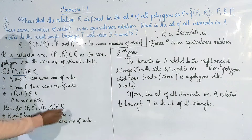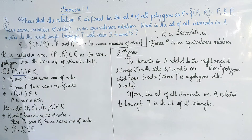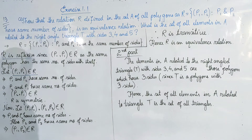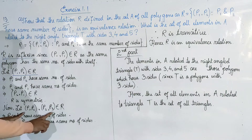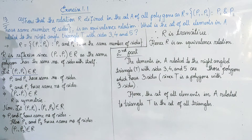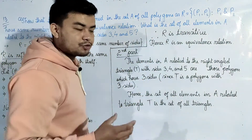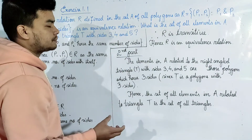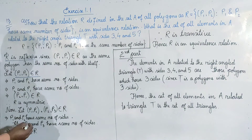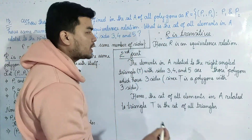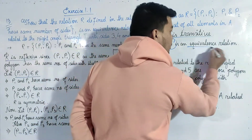P1 is related to P2, P2 is related to P3, and therefore P1 is related to P3 in relation R. So R is transitive. We can see that R is reflexive, symmetric, and transitive. Therefore, R is an equivalence relation.